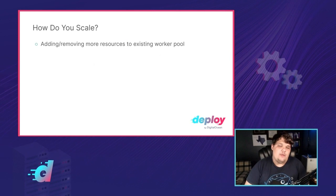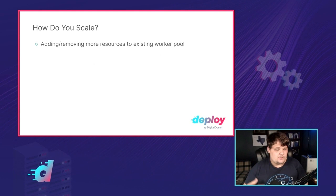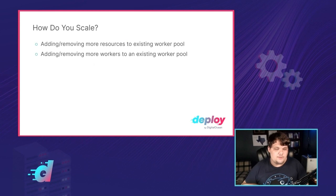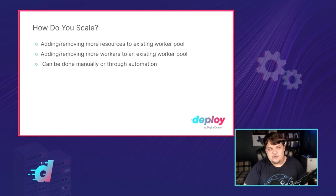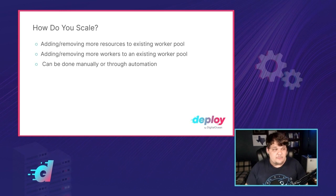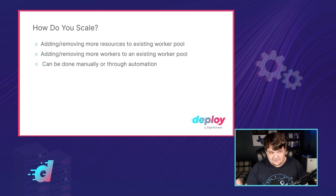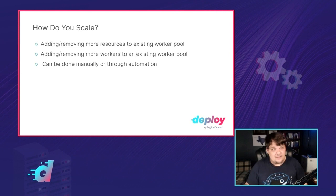So how do you scale? There are actually two main ways. You can either add or remove resources to an existing worker pool — adding more CPUs, more RAM — or you can add more workers to it. So instead of having three servers running my website, now I have five. This can be done either manually or through automation; typically it's best to do it through automation. Just remember that more code equals more potential for bugs. But do you want to be waking up at three o'clock in the morning to scale your web server? I didn't — that's why I automated it in my last job.